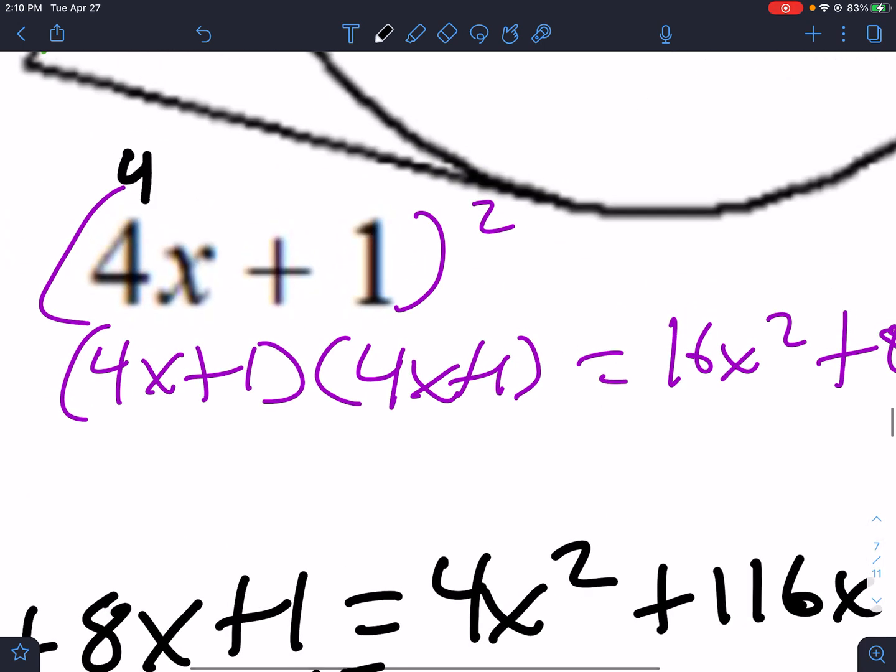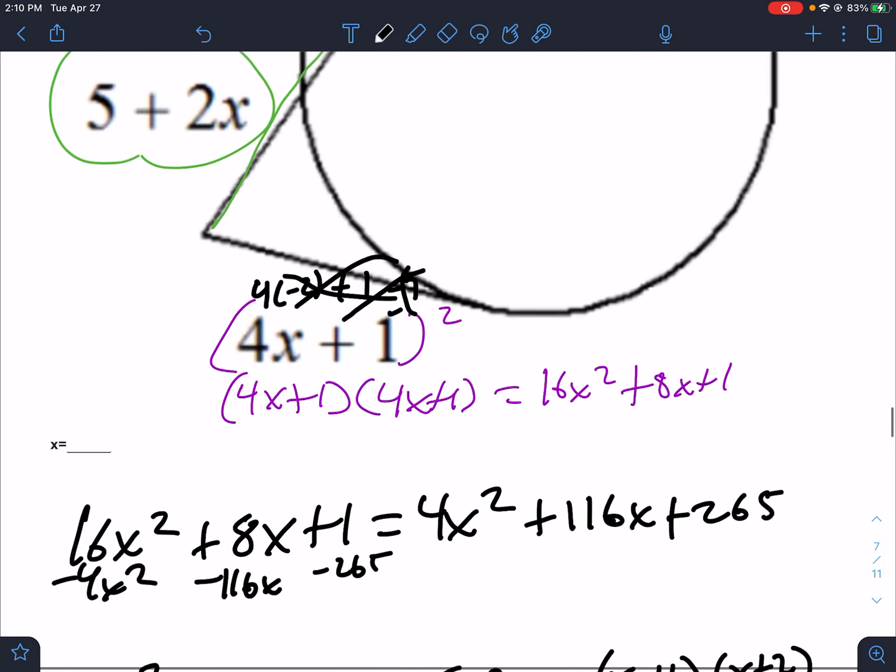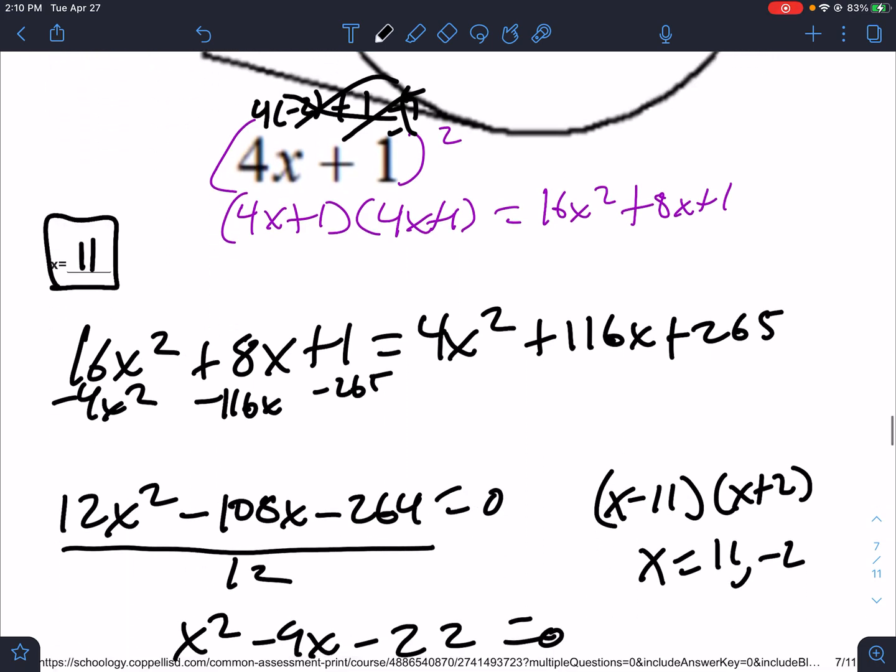But when I plug in negative 2, I get negative 7. That can't work. Nope. So x equals 11 is the only number that actually works.